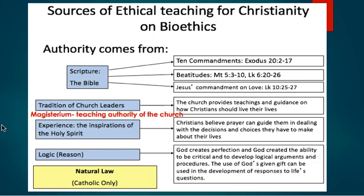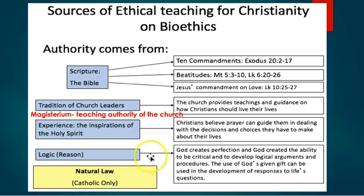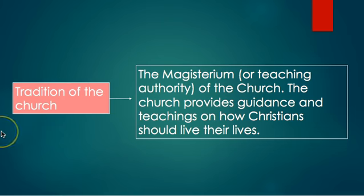There are four sources of authority that Christians use to develop their guiding ethical principles: the Bible, which we have already looked at — in particular the teachings on agape love — and natural law, which is used mainly by the Catholic Church. The tradition of the church refers to the magisterium, or teaching authority of the church, meaning those different Christian denominations.